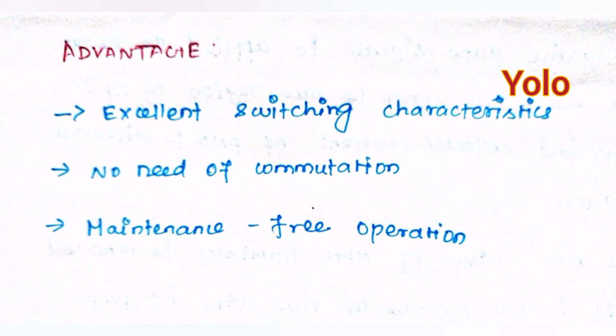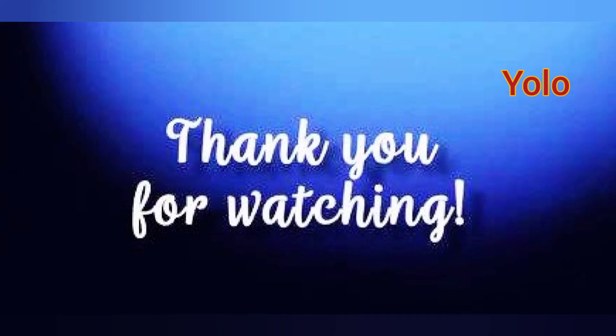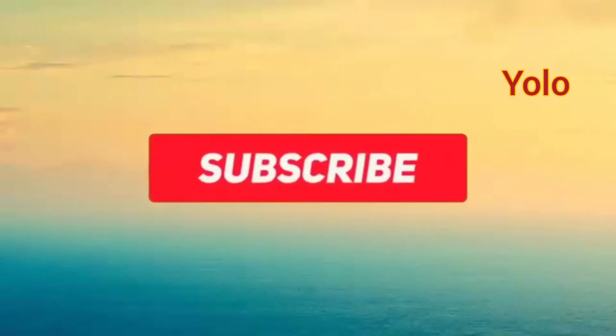Due to advantages like excellent switching characteristics, no need for a commutation circuit, and maintenance-free operation, GTO usage is predominant over thyristors in many applications. It is used as the main control device in choppers and inverters. Some applications include AC drives, DC drives, DC choppers, AC stabilizing power supplies, DC circuit breakers, induction heating, and other low-power applications.